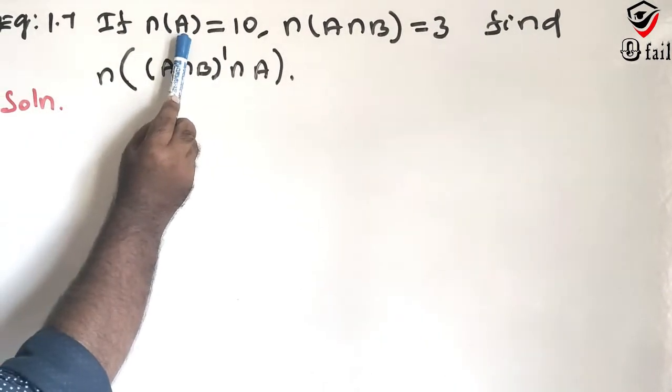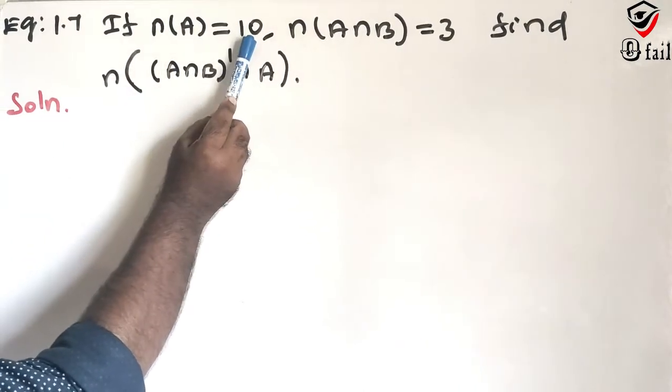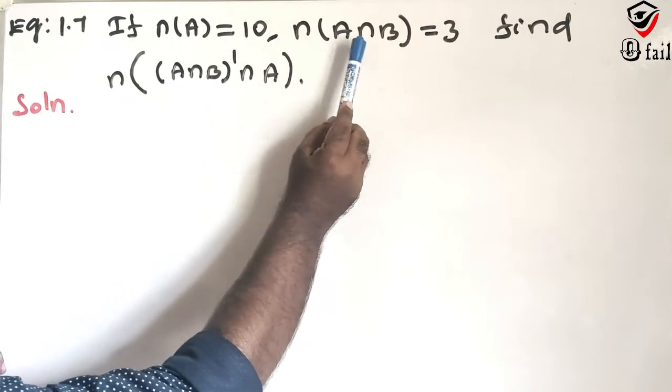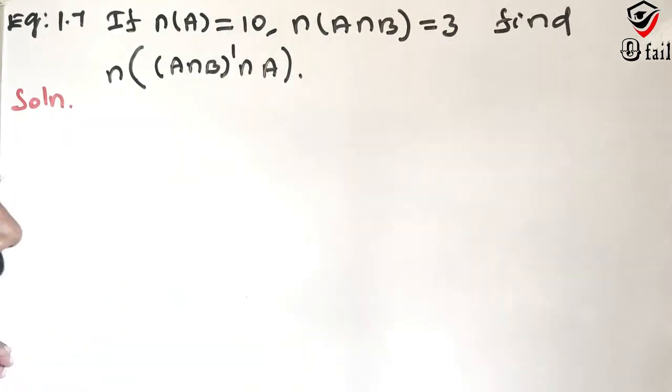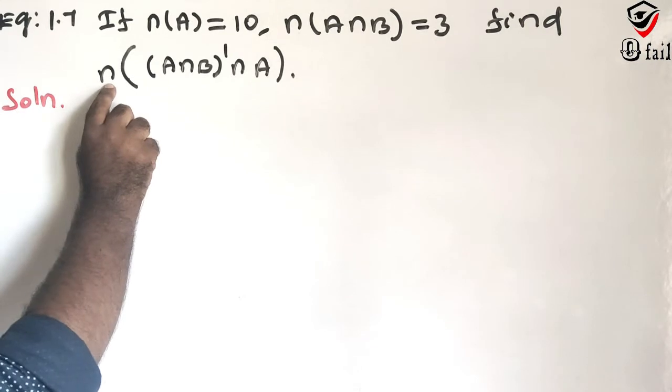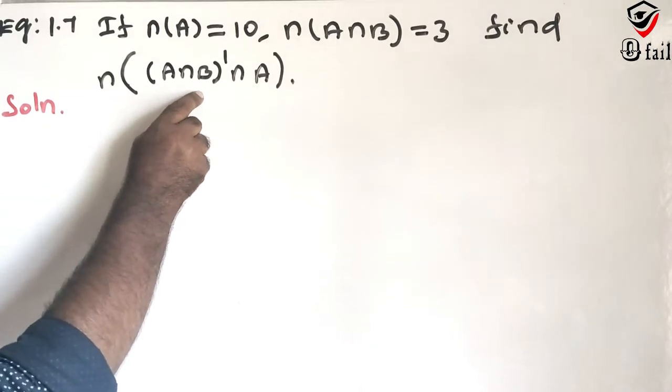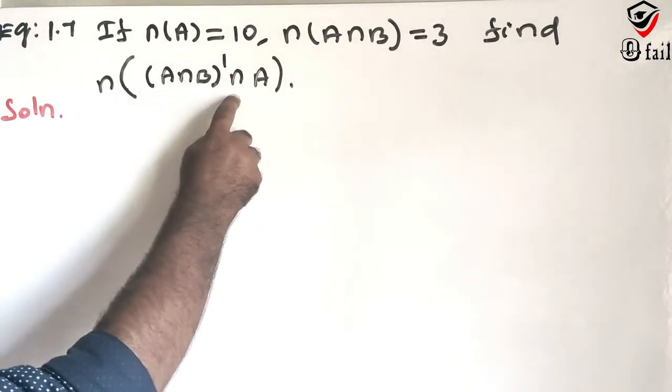If n of A, number of A is equal to 10, n of A intersection B is equal to 3, find the value of n of A intersection B whole dash intersection A.